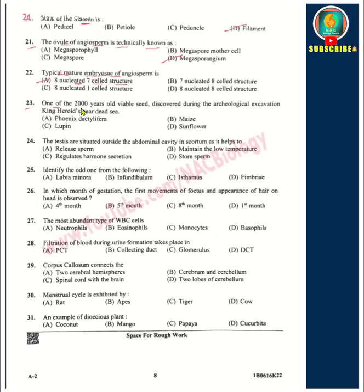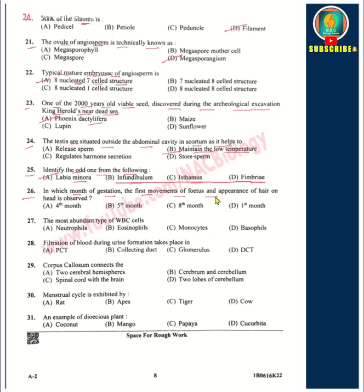23rd question: A 2000-year-old viable seed discovered during archaeological excavation near the Dead Sea is option A — Phoenix dactylifera. 24th: The testes are situated outside the abdominal cavity in the scrotum to maintain low temperature. 25th: Labia minora is an external genitalia part, not part of the internal structures like infundibulum, isthmus, or fimbriae. 26th: The first movement of fetus and appearance of hair on the head occurs in the 5th month of gestation. The most abundant type of WBC is neutrophils — 60% of the body's white blood cells.